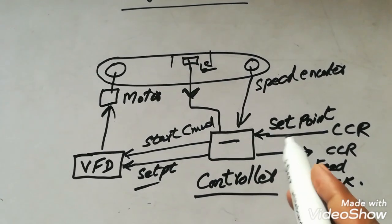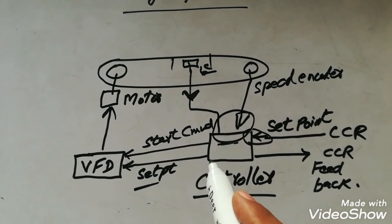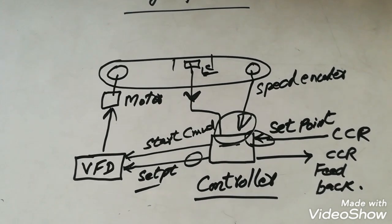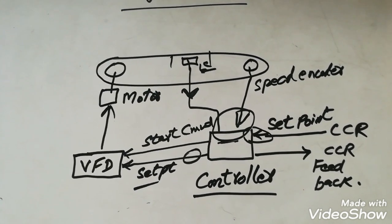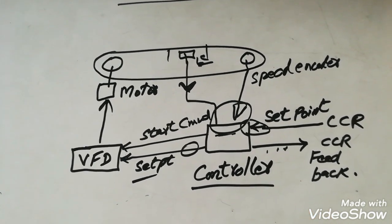Controller will check the set point and the load cell and speed encoder feedback, and according to that it will change the set point to the VFD until the set point and the feedback are equal.